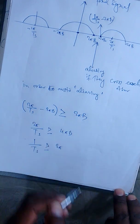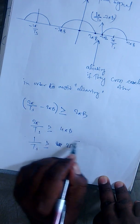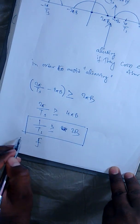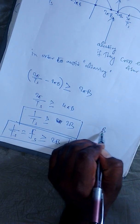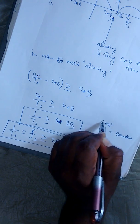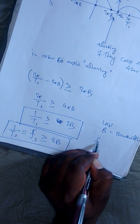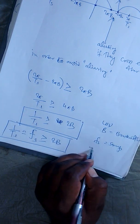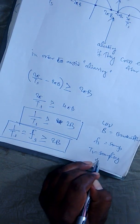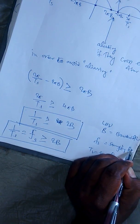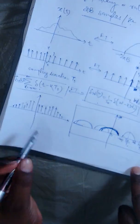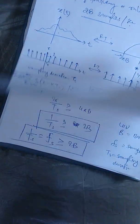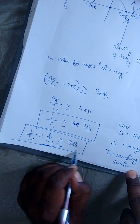To avoid aliasing, the condition is that 2π/T_s − 2π·beta ≥ 2π·beta, which gives 2π/T_s ≥ 4π·beta, so 1/T_s ≥ 2·beta. Since 1/T_s = F_s, the sampling frequency, we get F_s ≥ 2·beta. Here beta is the bandwidth in hertz and F_s is the sampling frequency. This is the Nyquist sampling theorem.